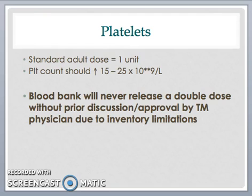To summarize, the standard dose of platelets for adults is one unit. The platelet count should rise by about 15 to 25 when a one-hour post-transfusion platelet count is measured. Due to inventory limitations, the transfusion medicine service will never release a double dose of platelets without prior discussion and approval by the transfusion medicine physician.